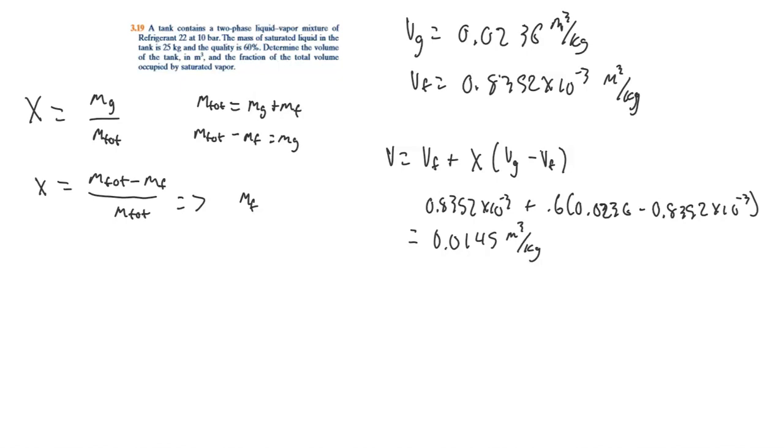So this will tell us the total mass of the liquid is equal to mass total times 1 minus X. And then we're just going to solve for that, and this is going to be Mf over 1 minus X equals M total. So this will tell us the total mass of the whole mixture.